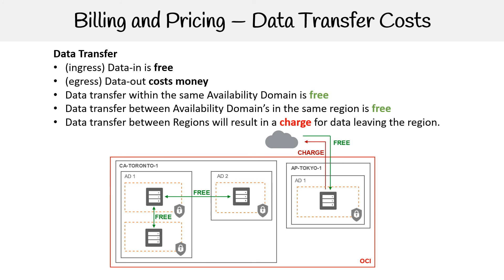Now imagine we want to get data from the CA Toronto one region to the AP Toronto one region. If you send data out, it would have to go out to the internet and then come back in to that other region. So even though we want to keep it in OCI, the fact that it's another region means it has to leave to the internet and come back in — and that's going to result in a charge.